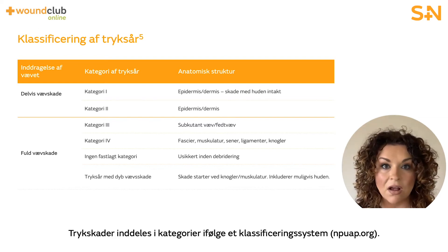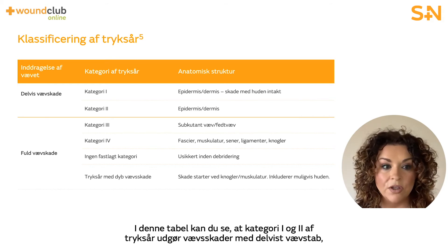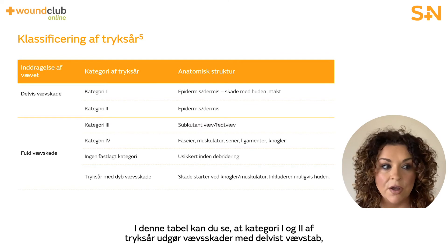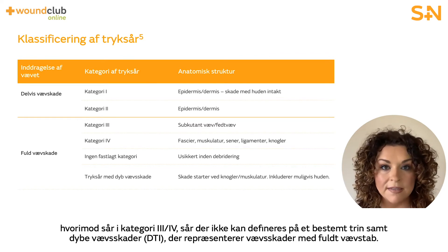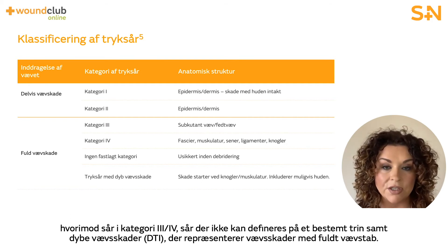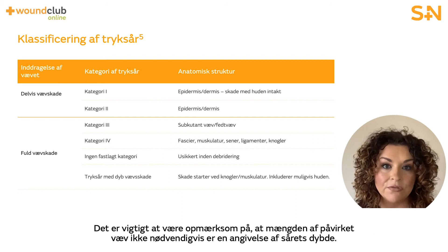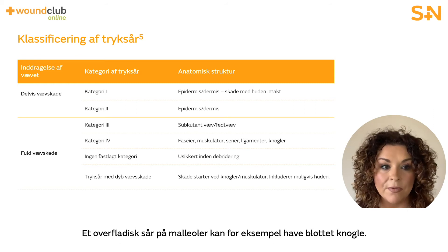Pressure ulcers are categorized according to a classification system. In this table, you can see that category one and two pressure ulcers represent partial thickness tissue damage, whereas category three, four, unstageable, and deep tissue injuries (DTIs) represent full thickness tissue damage. It's important to remember that the tissue involvement is not necessarily an indicator of wound depth; for example, a shallow wound over the malleolus may have exposed bone.